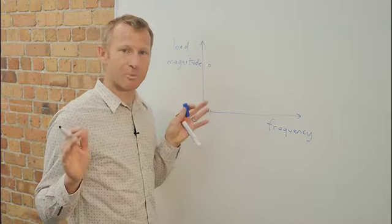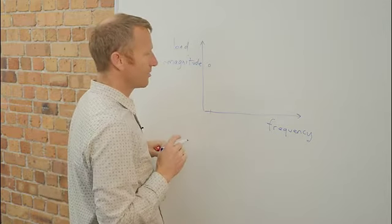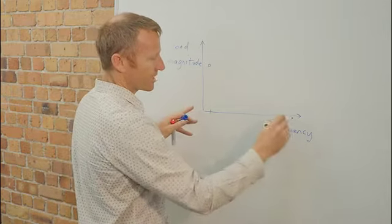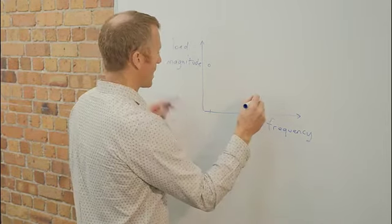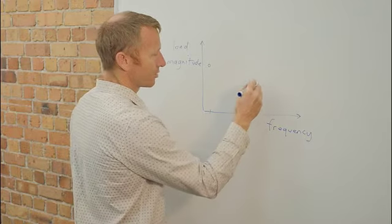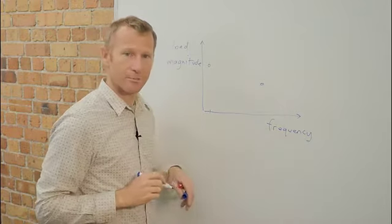You might go and play basketball for two hours, and obviously along the frequency axis, you're experiencing many more cycles of load. The magnitude of that load might be a little bit less, so you might sit somewhere here on this diagram.